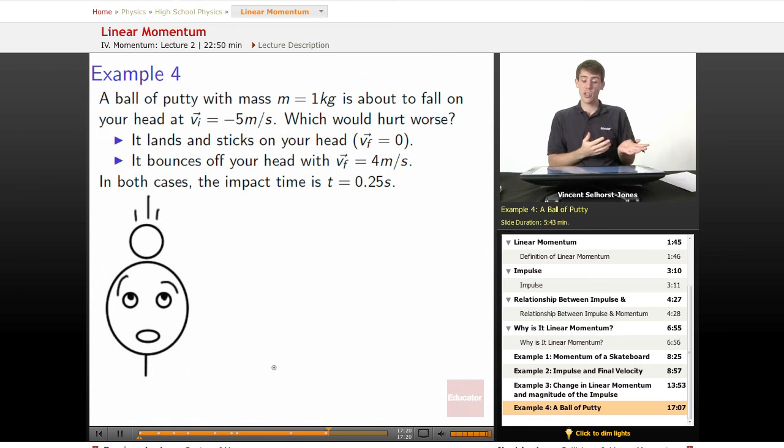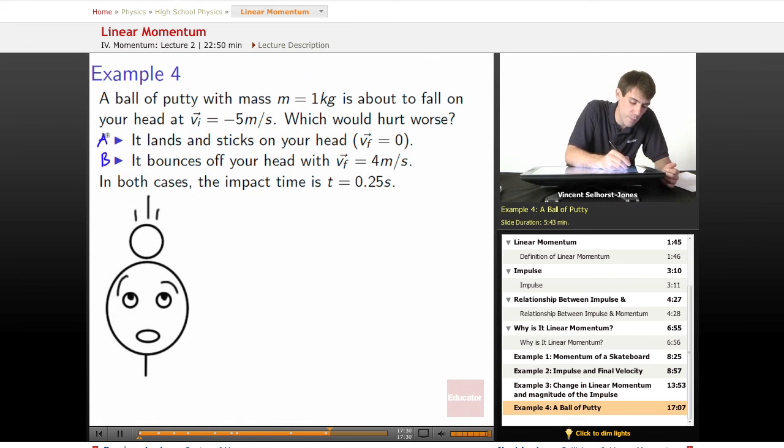It lands and sticks on your head, so it lands and its final velocity is 0, or it bounces off of your head with a velocity final equal to 4 m per second. Let's call these cases A and B.